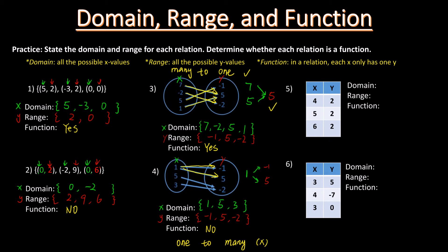Question 5. Domain is all possible x-values, so we write {4, 5, 6}. Range is all possible y-values: we have 2, 2, 2. Since we only write repeated numbers once, the range is {2}. Although all x-values 4, 5, and 6 share the same y-value, many-to-one is okay in a function, so it's a function.